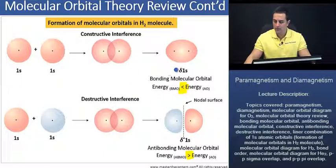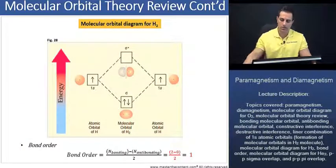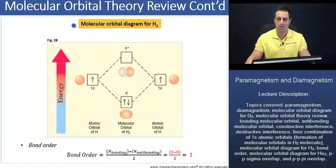Now that we've taken a look at sigma 1s orbitals and sigma star 1s orbitals, let's take a look at the molecular orbital diagram for an H2 molecule. And that'll help us understand molecular orbital diagrams.